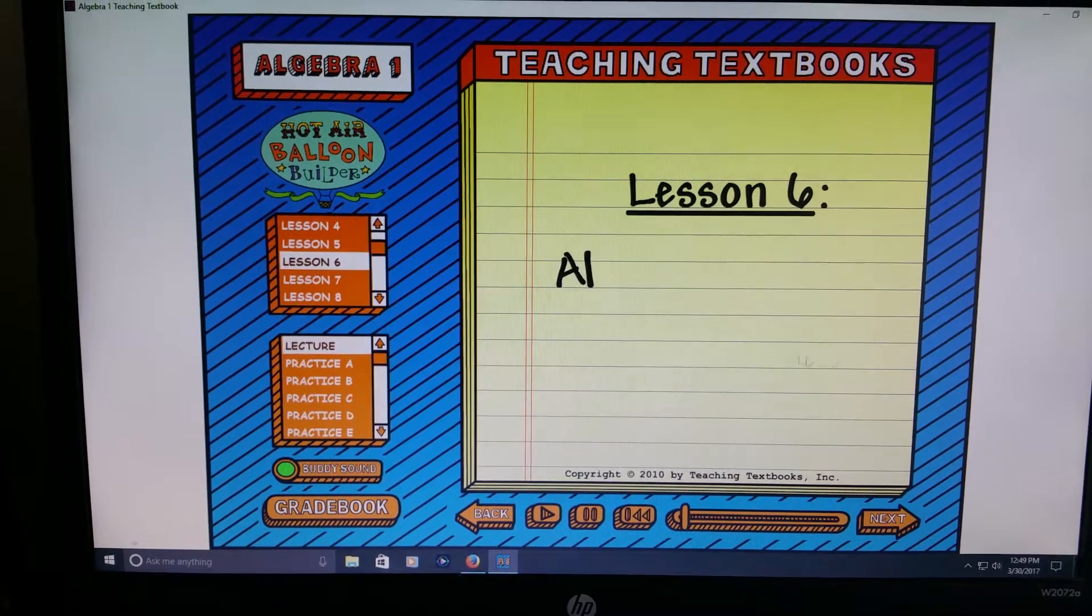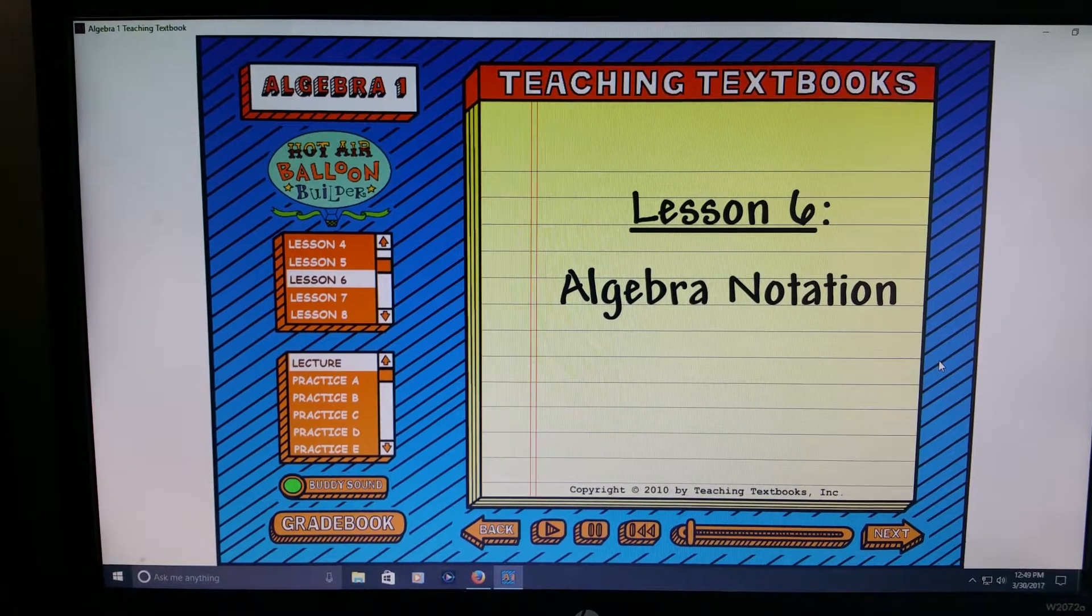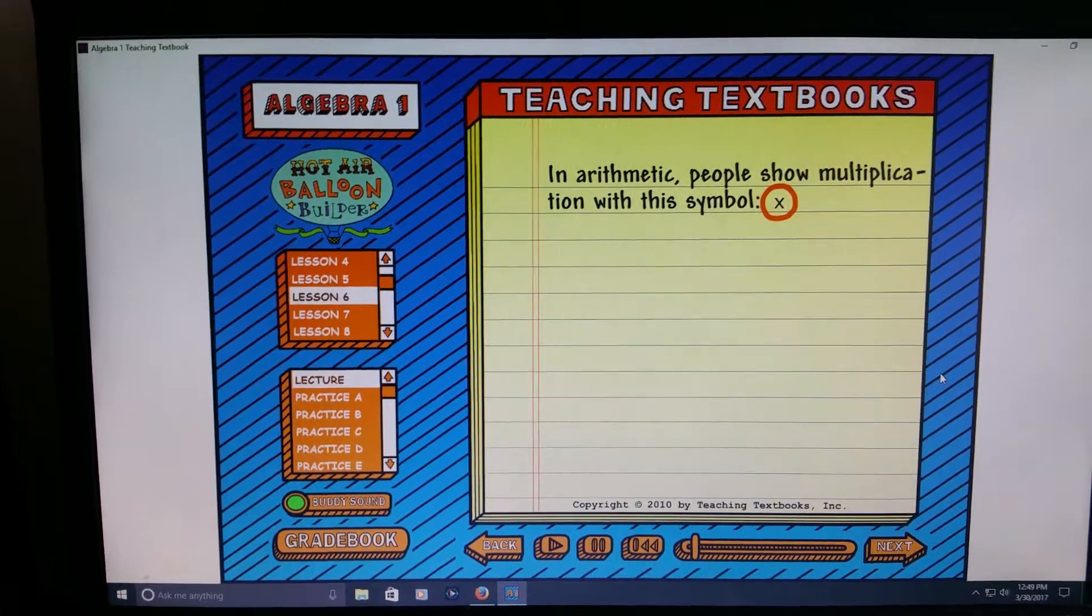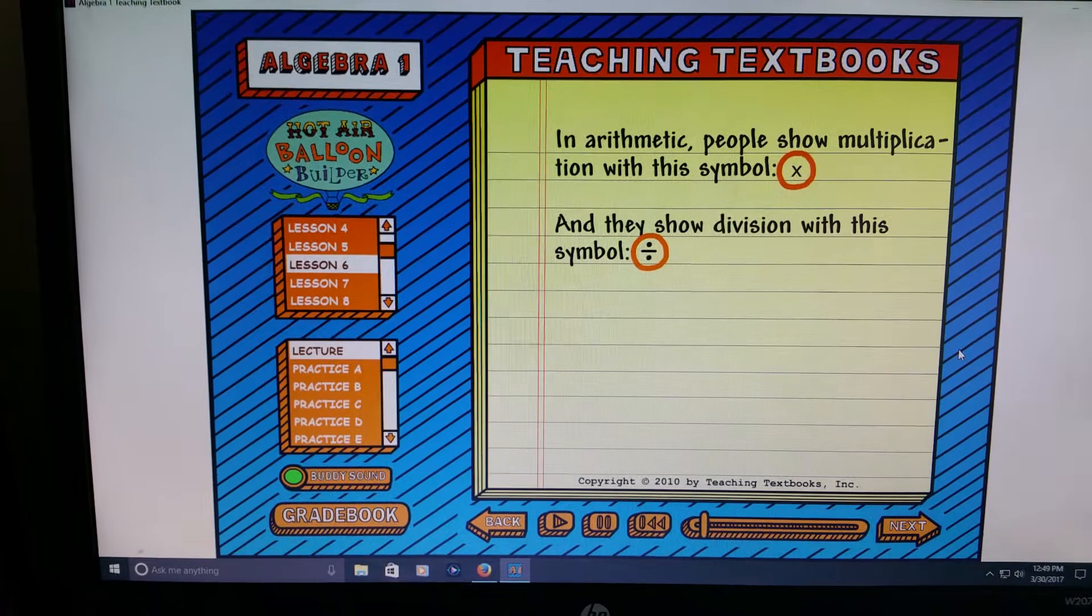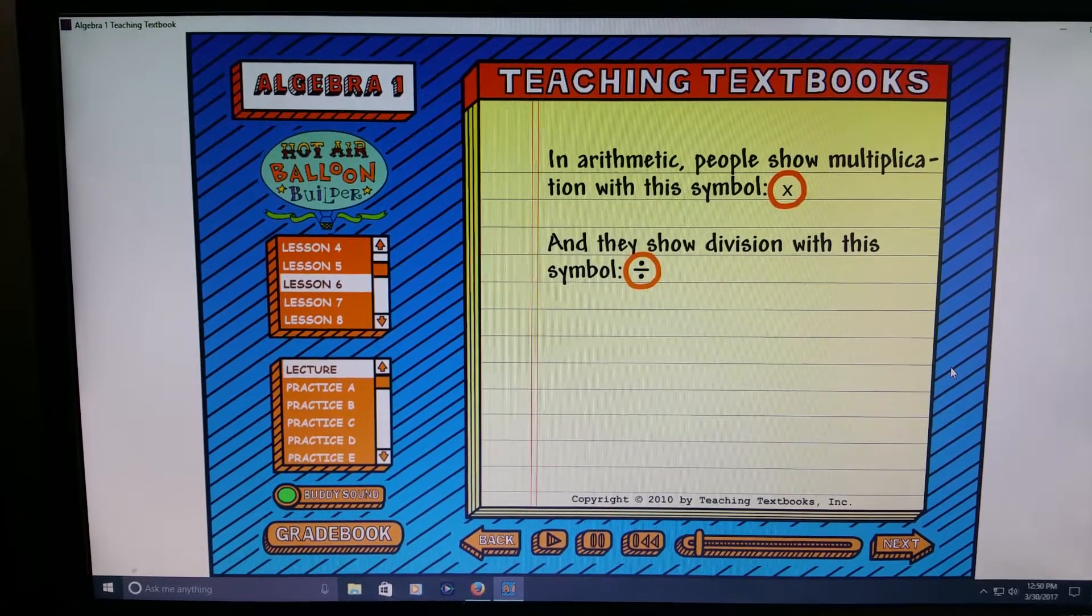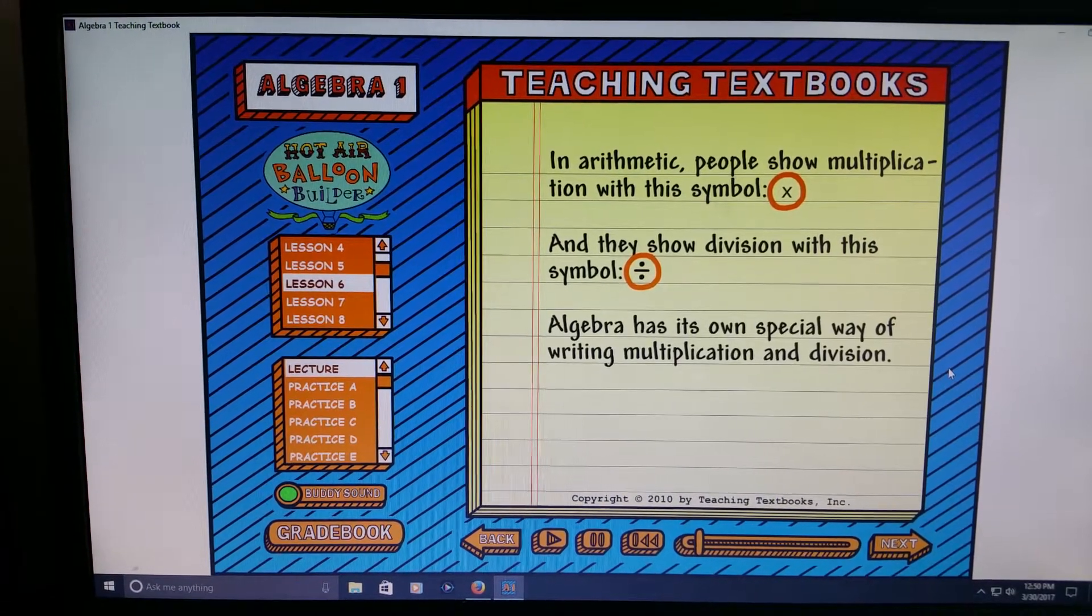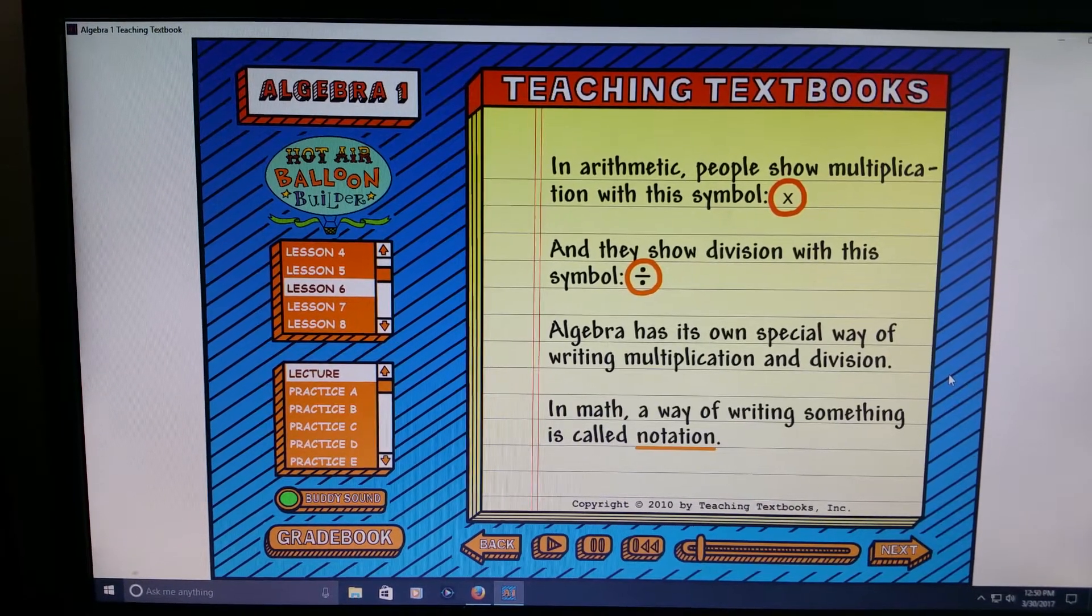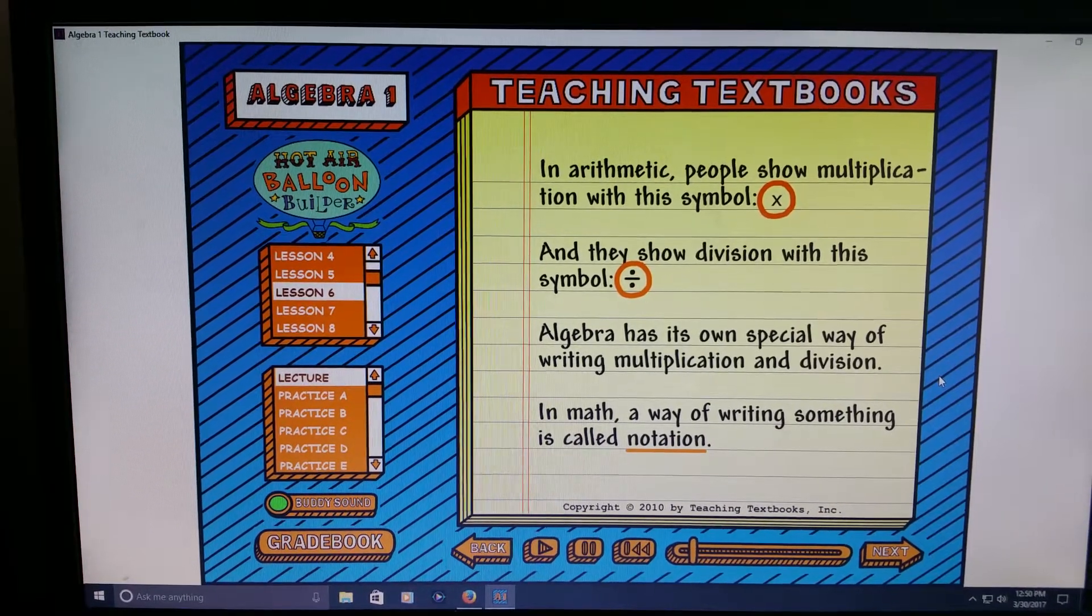Lesson six, Algebra Notation. In arithmetic, most people use this symbol to show multiplication and they use this symbol to show division. But it turns out these symbols aren't used very much at all in algebra or more advanced math. Algebra actually has its own special way of writing multiplication and division. In math, a way of writing something is called notation. So in this lesson we're going to talk about algebra notation, but it's also the way we write things in even more advanced math.